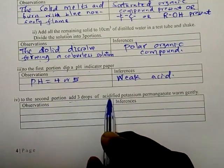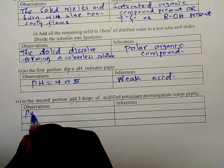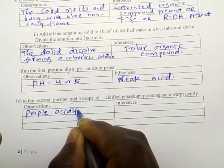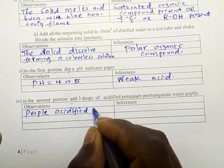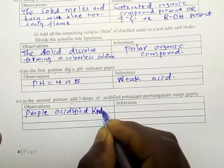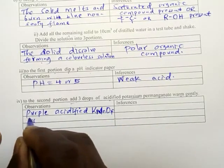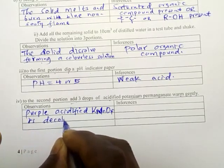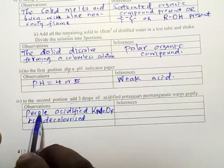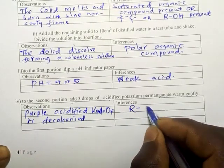To the second portion, add acidified potassium permanganate and warm gently. Observation is that purple acidified potassium permanganate is decolorized. So decolorized is the color change from purple to colorless. That confirms that the alcohol is present. R-OH present.